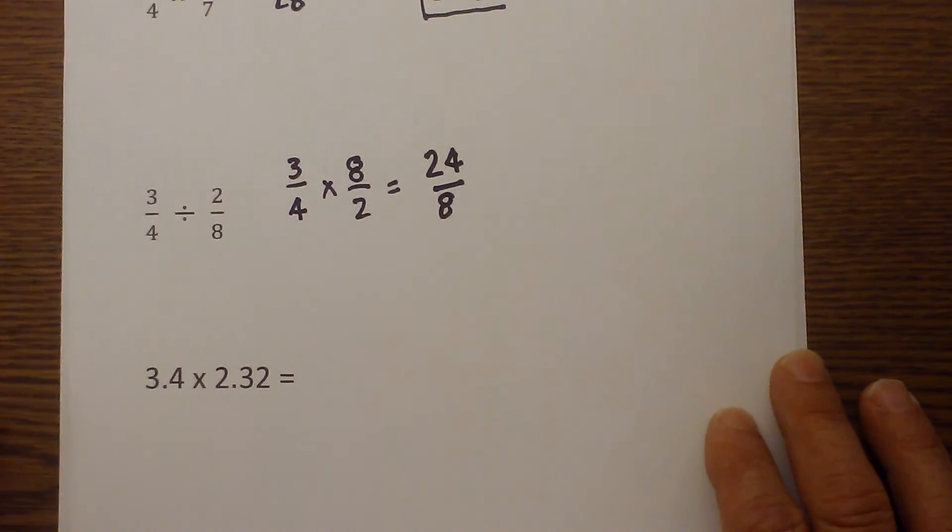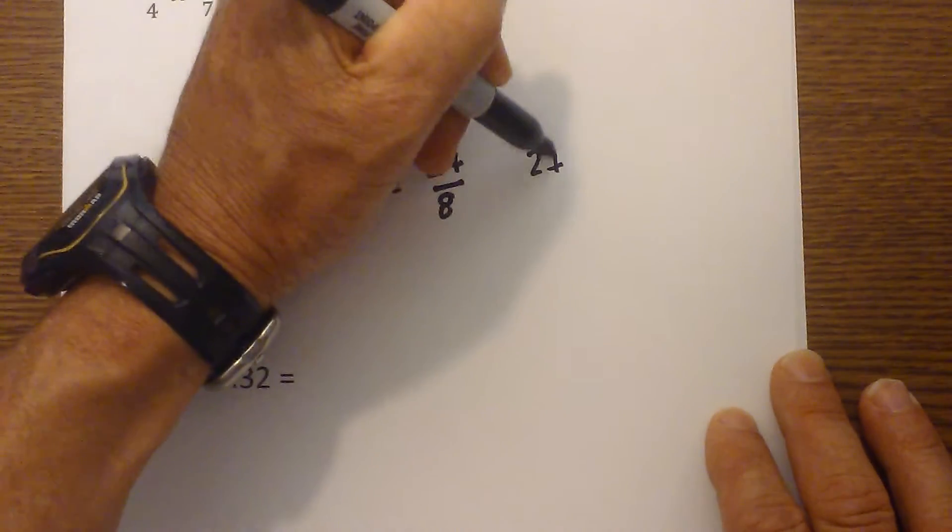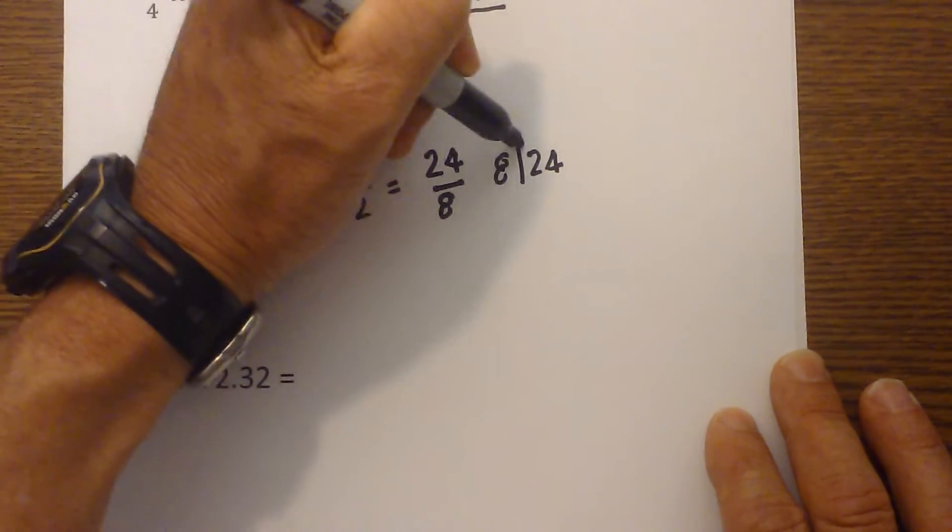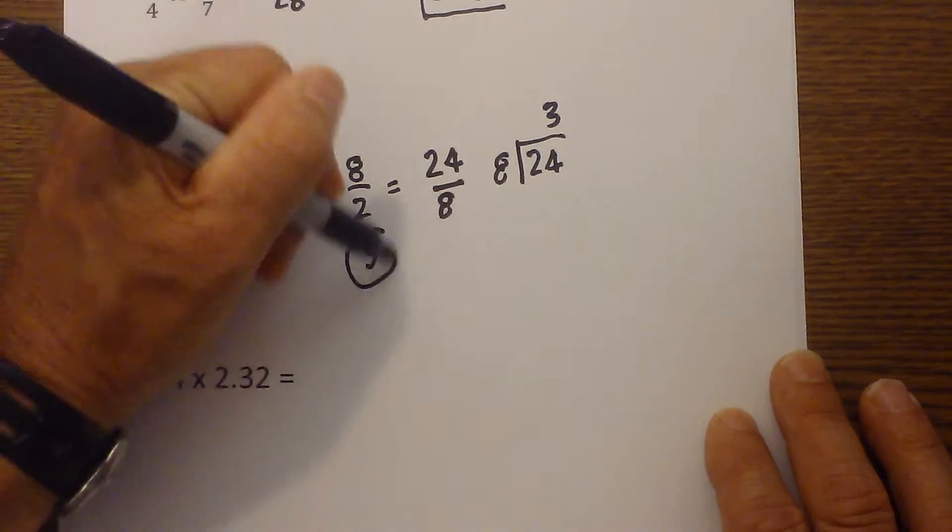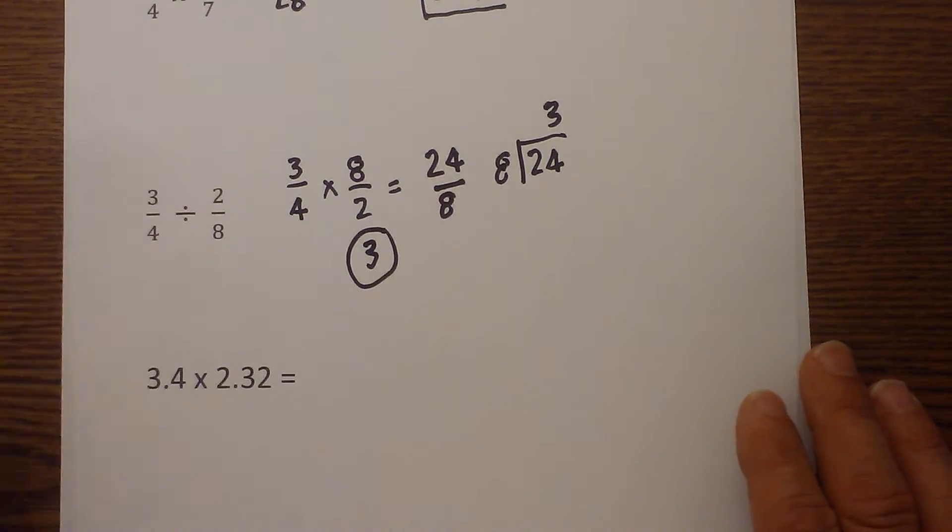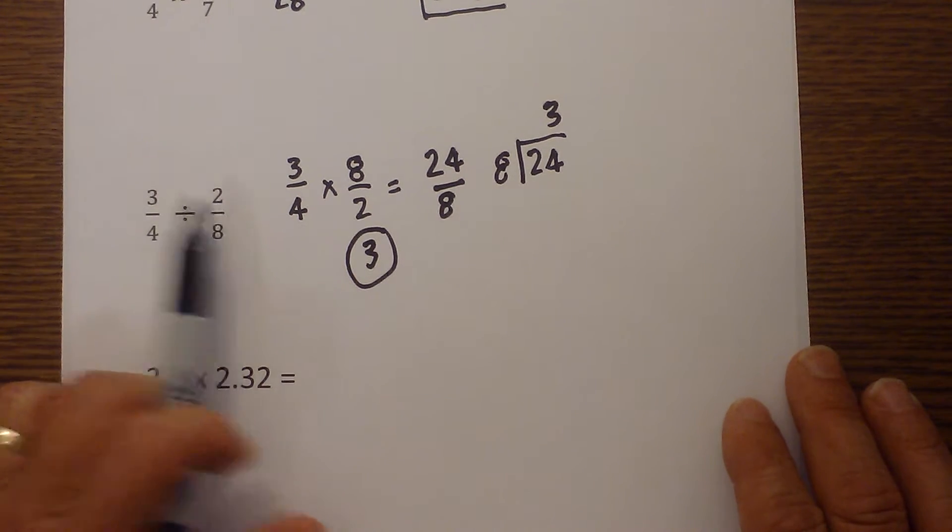Now I have an improper fraction. So I just divide 24 by 8, and that goes 3 times so the answer is 3. So there the shortcut is keep, change, flip.